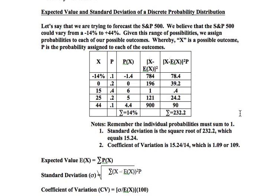Let's assume that we have Project A and Project B. What we will do is always select the project that has the smallest coefficient of variation. Coming back to our example, we expect 14%, but undoubtedly it's not going to be exactly 14% — that's why we calculate the standard deviation to indicate the amount of variability.